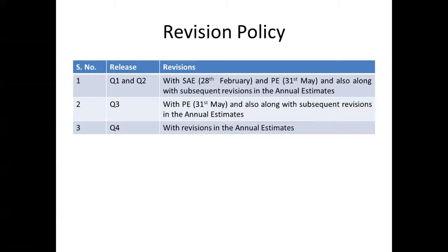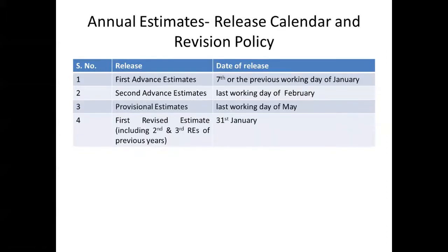Quarter-3 Estimates are revised along with Provisional Estimates, which are released on 31st May. Besides, these are revised with subsequent revisions in annual estimates. Q4 Estimates are revised with revisions in annual estimates.